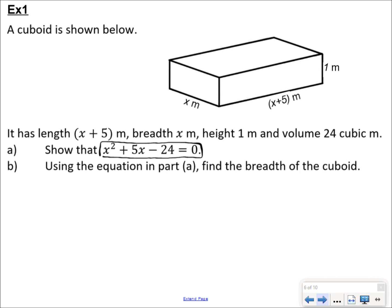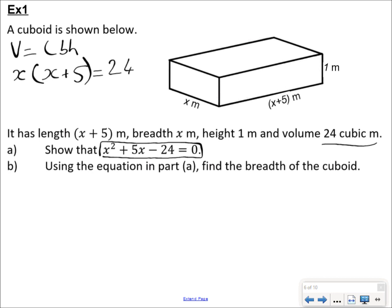There's no guarantee that the question would necessarily be broken down for you. Because you're given all three dimensions and you're told that the volume is 24 meters cubed, you can start off part A by saying that volume is length times breadth times height. So x times (x + 5) times 1 equals 24. When you multiply that out, you get x² + 5x = 24. Making the right-hand side equal to zero gives x² + 5x − 24 = 0.